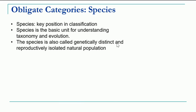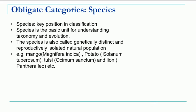Species can be defined as a genetically distinct and reproductively isolated natural population, meaning only members of that population can interbreed among themselves. It is a natural population of individuals that resemble one another in all essential morphological and reproductive characters, carry the same type of genetic material, can freely interbreed under natural conditions, and produce fertile offspring. A cross between a donkey and a horse results in a mule, but that mule is not a species because it is not fertile.